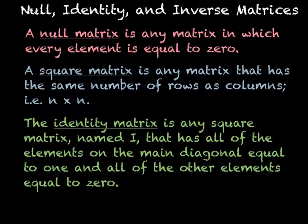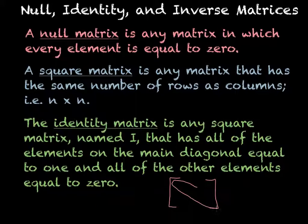So if we are given a square matrix, doesn't matter what size it is, everything on your main diagonal, which would be going from your top left to your bottom right, are going to be 1s, and everything else would be 0s.